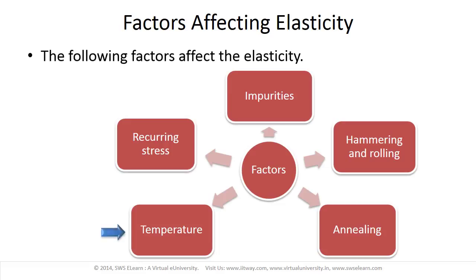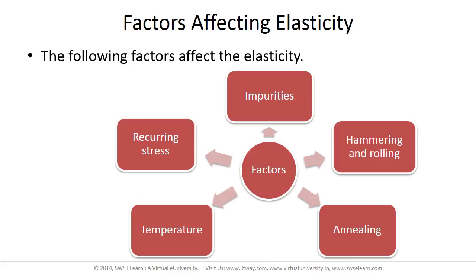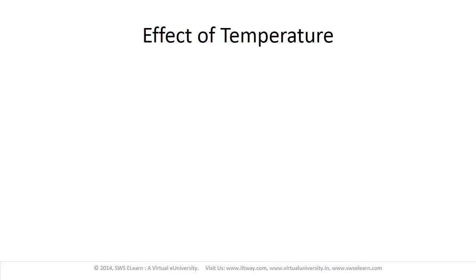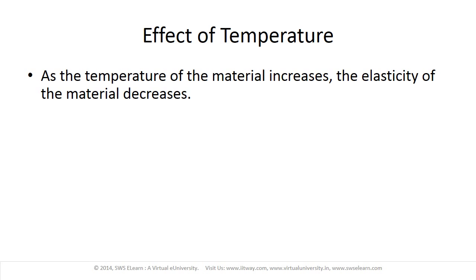Even though for a given material elasticity is constant, the following factors affect it: temperature, annealing, hammering and rolling, impurities, and recurring stress. Considering these one by one — effect of temperature: as the temperature of the material increases, the elasticity of that material decreases.